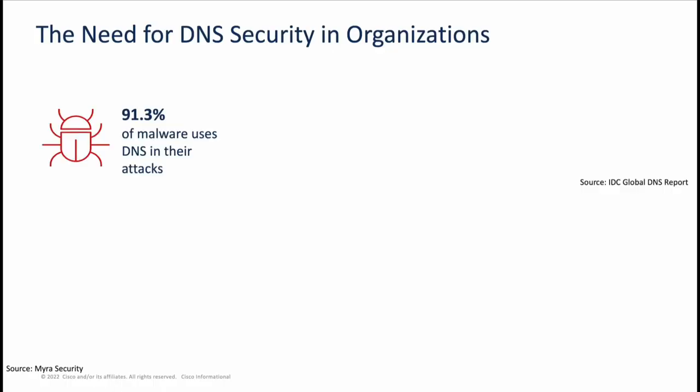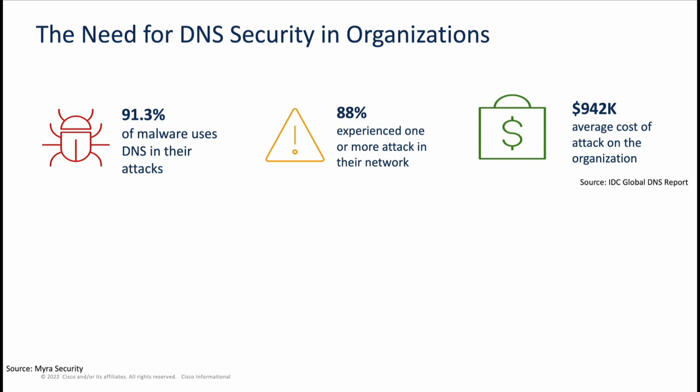Based on an IDC Global DNS report, 91.3% of malware networks use DNS in their attacks. We have 88% of organizations having experienced at least one attack in their network, and the average cost of an attack on an organization's network approaches almost a million dollars. We are also seeing more and more organizations adopting a work-from-anywhere model, which is causing an increase in the frequency and damage of DNS attacks.